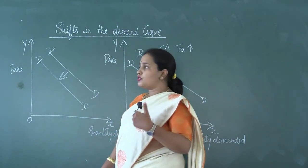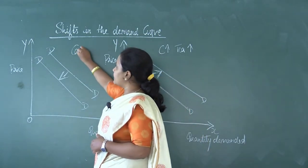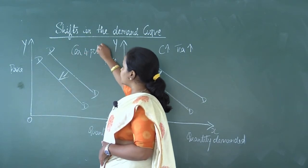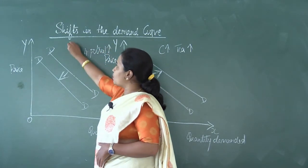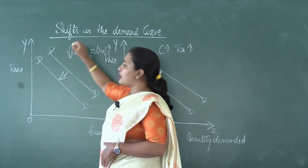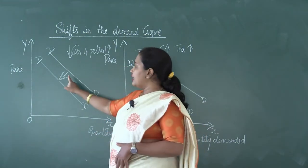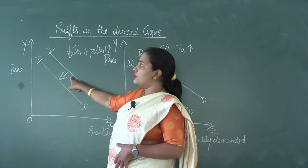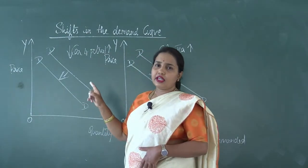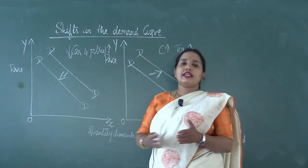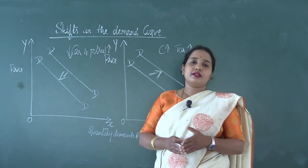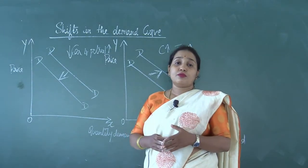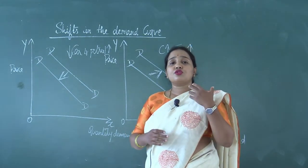On the other hand, for complementary goods, the demand curve shifts leftward. You can take the example of car and petrol: whenever there is an increase in the price of petrol, the demand for cars comes down, and hence the demand curve shifts leftward for complementary goods.